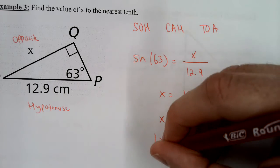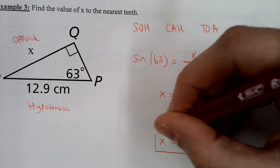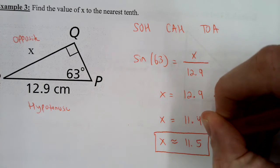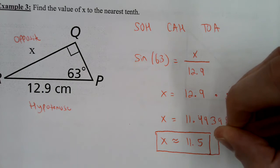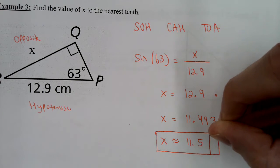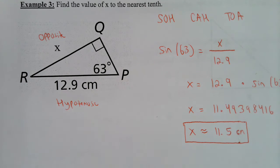Rounded to the nearest tenth, X is approximately 11.5 centimeters. You should know ahead of time the answer must be less than 12.9 because the hypotenuse is always the longest side.